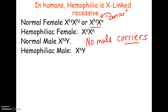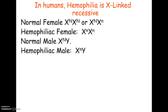A male with a sex-linked trait — where would he have gotten it? He had to get it from his mom, because he got the Y from his dad, and only males carry the Y. So if a guy has a sex-linked trait, he never got it from his dad; he always got it from his mom. This also means that if you're a male with hemophilia, as long as you have sons, you'd never pass the trait to them, because you give your sons the Y. Your daughters probably wouldn't have the trait either, because a girl needs a copy from both dad and mom.